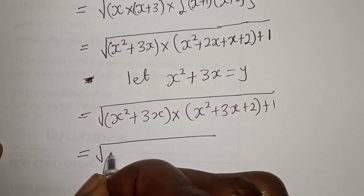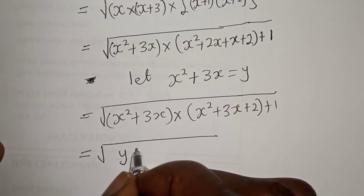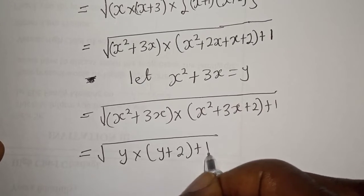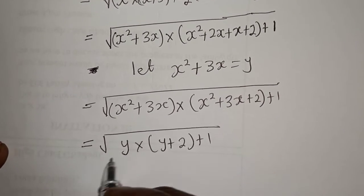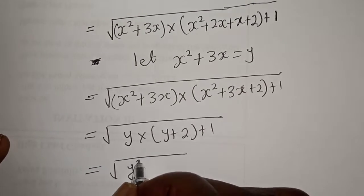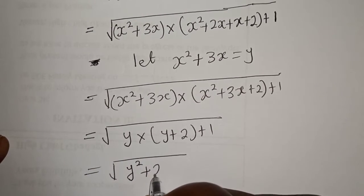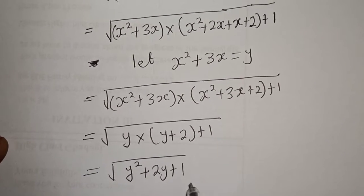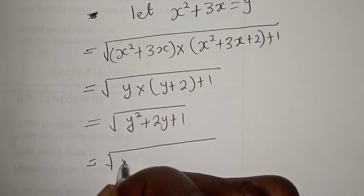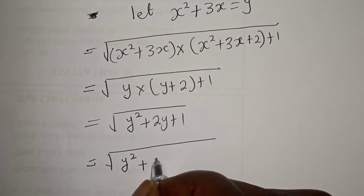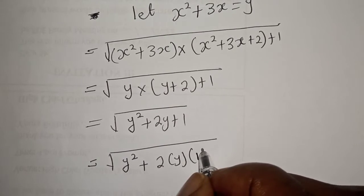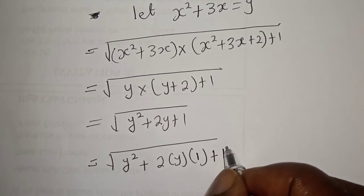Let Y equal S squared plus 3S. Substituting, this becomes the square root of Y multiplied by Y plus 2, plus 1. Opening the bracket, we have Y squared plus 2Y plus 1, which can be written as Y squared plus 2 times Y times 1 plus 1 squared.